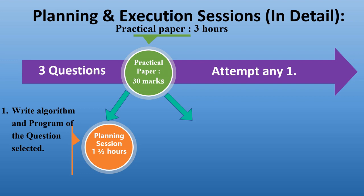Once students get the paper, read all three questions thoroughly and decide the question you want to opt for. Write the algorithm and the program of the selected question. While writing the algorithm, make sure you write all step numbers — Step 1 beginning as a start and the last step as the end statement. Then write down the Java code for the selected question. Make sure you comment the program thoroughly and draw the VDD — the variable description table — for the selected question. Once you're sure about your writing, call the examiner and get their signature. This brings an end to the planning session.